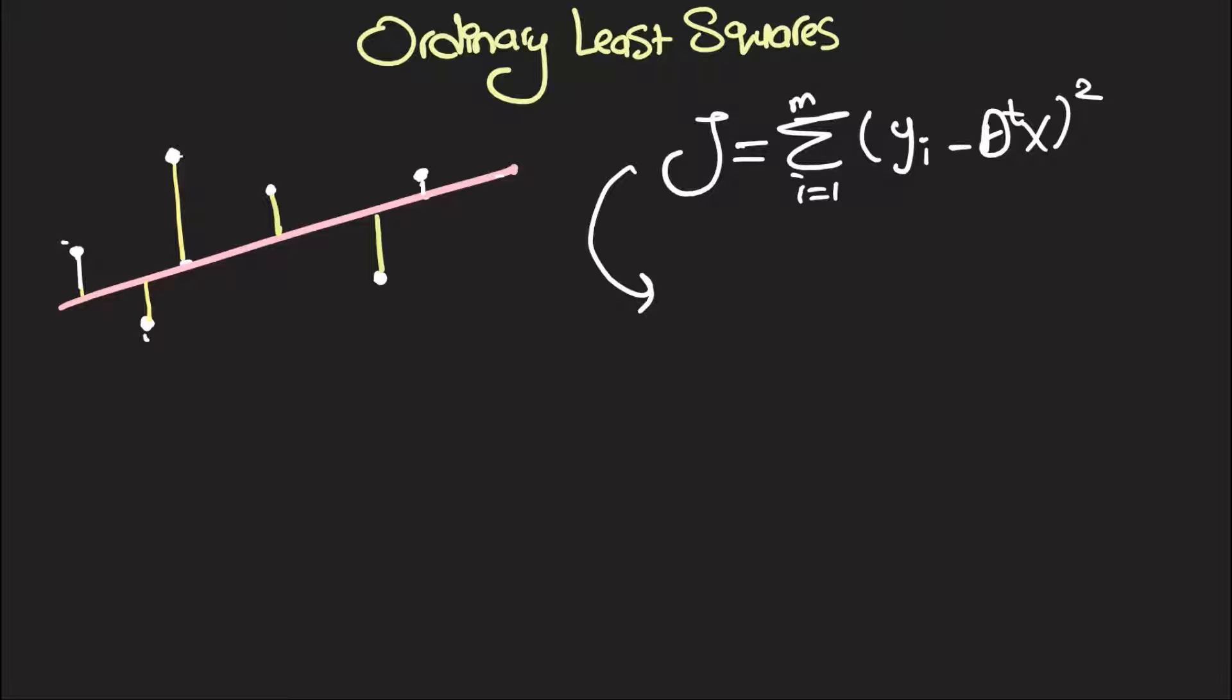In order to minimize this, we're going to first have to write this cost function in matrix form, so we need to get rid of this summation and this square, make it only involve vectors and matrices. So then we can find partial J over partial theta and set that to zero.